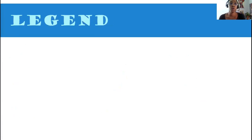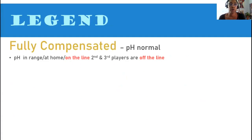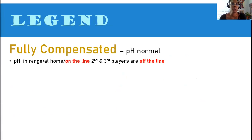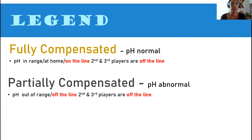Let's get into the method. So here's our legend. This is what our interpretation is going to be. Your ABG could be fully compensated, which means your pH is normal. Your pH is within that 35 to 45 range.